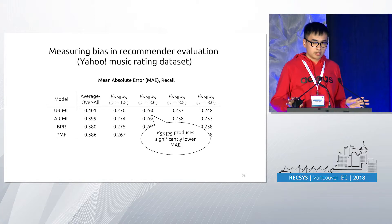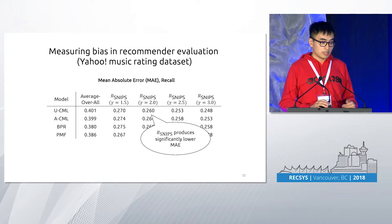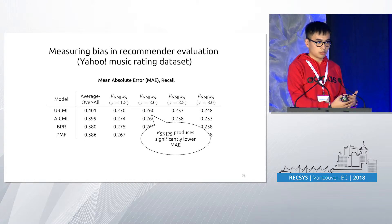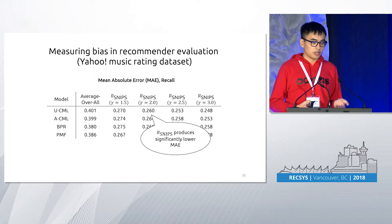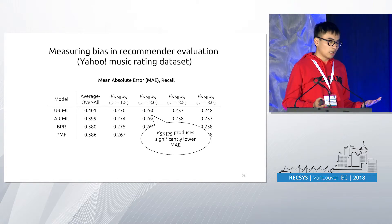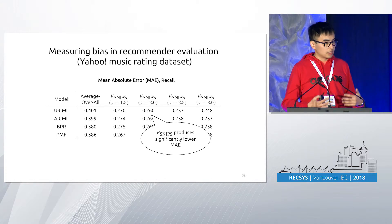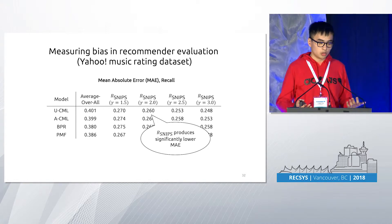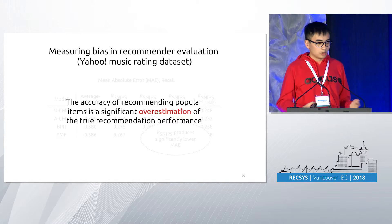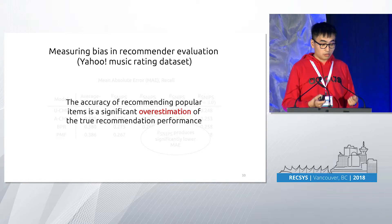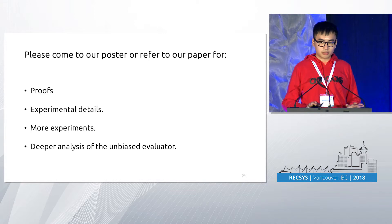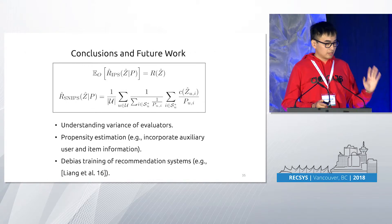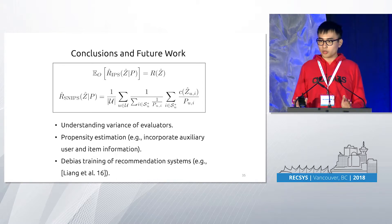We conducted several experiments. In one, we compare the outputs of different evaluation approaches to the true recommendation performance, and find that the SNIPS evaluator produces significantly lower mean absolute error compared to average overall. In other words, although this approach is quite simple, it significantly reduces the evaluation bias of the naive average overall approach. Another way to think about this result is that the accuracy of recommending popular items is a significant overestimation of true recommendation performance.